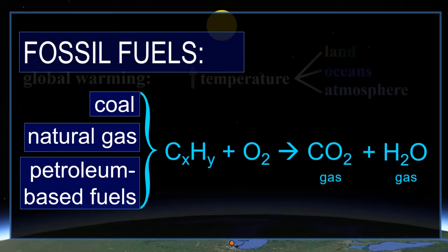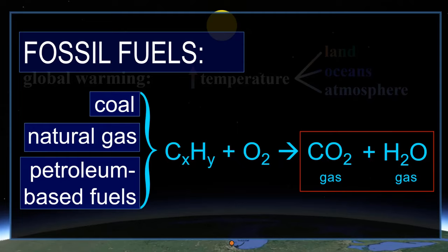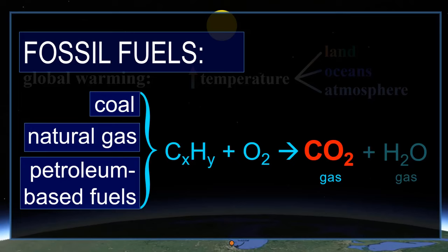All fossil fuels — coal, natural gas, and petroleum-based fuels — are hydrocarbons, composed of carbon and hydrogen atoms. When burning, or combining with oxygen, the result is the production of carbon dioxide and water vapor. However, the amount of water vapor produced is negligibly small compared to what's already in the atmosphere. But fossil fuel burning results in a large increase in carbon dioxide compared to what was already present, which produces a global rise in temperature.